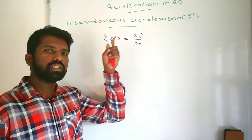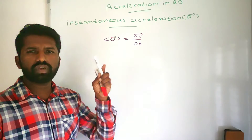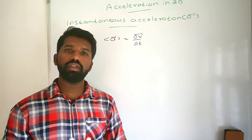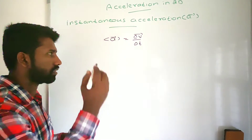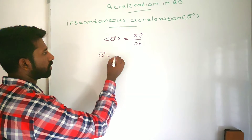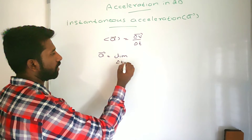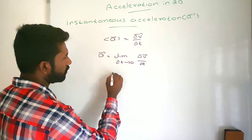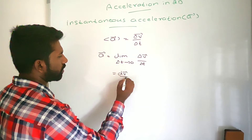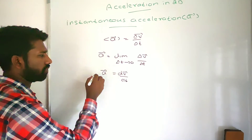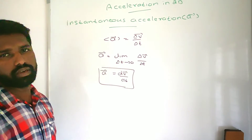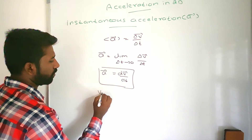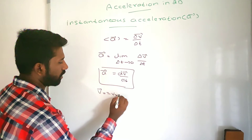Instantaneous acceleration means the acceleration at a particular instant, so the difference in time is very, very small. The instantaneous acceleration is the limiting value of average acceleration — that is, the limit as delta t tends to zero of delta V divided by delta t. This gives us dV/dt, the derivative of instantaneous velocity with respect to time. Velocity V equals Vx i-hat plus Vy j-hat, where Vx and Vy are the X and Y components.